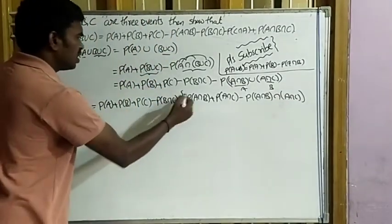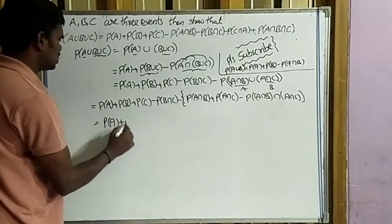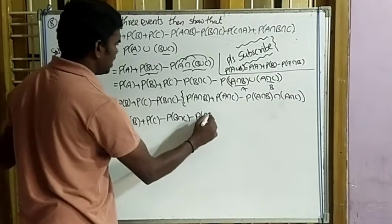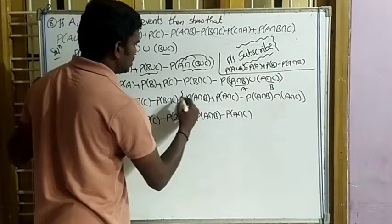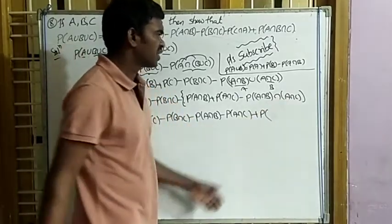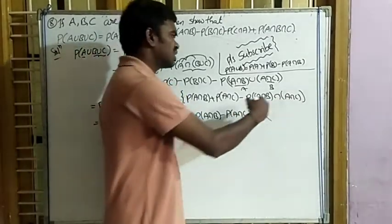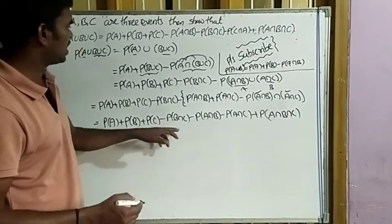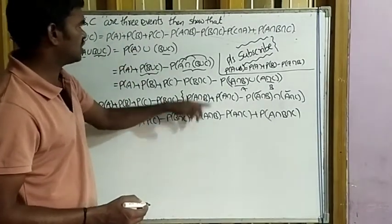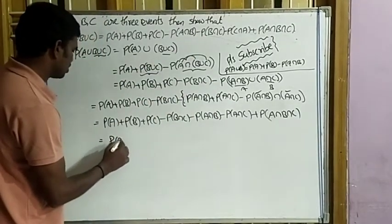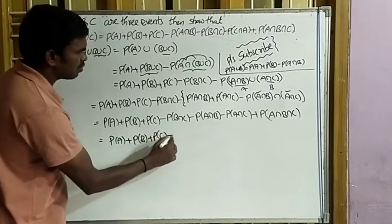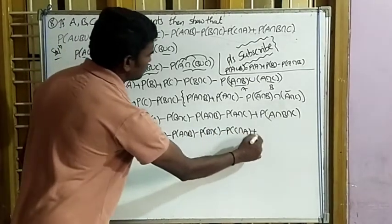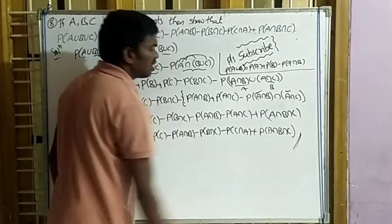Simplifying with the minus sign outside the bracket: P(A) + P(B) + P(C) − P(B∩C) − P(A∩B) − P(A∩C) + P(A∩B∩C). Writing in order: P(A) + P(B) + P(C) − P(A∩B) − P(B∩C) − P(C∩A) + P(A∩B∩C). This is the required RHS, hence proved.